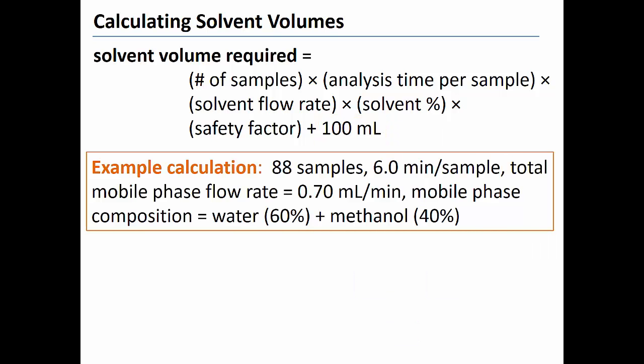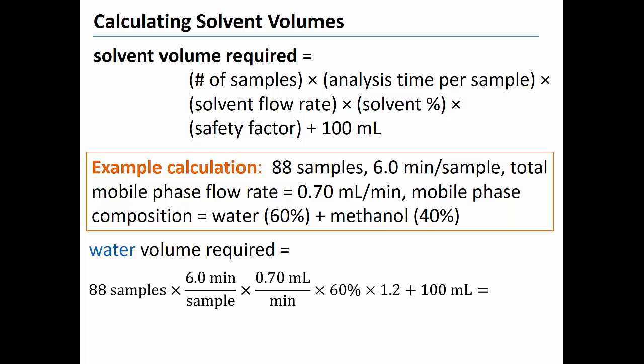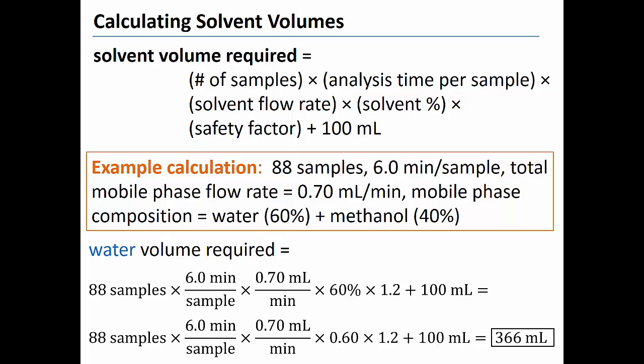If a user wants to analyze a batch of 88 samples, each injected one time, using a method that requires six minutes of analysis time per sample, a total mobile phase flow rate of 0.7 milliliters per minute, and a mobile phase that is fixed at 60% water and 40% methanol, we can use the equation shown above to estimate the needed volume of water and methanol. Let's begin by calculating the volume of water required. We can insert the given values into our equation. The equation predicts that we will need to begin the analysis with at least 366 milliliters of water in the water bottle.